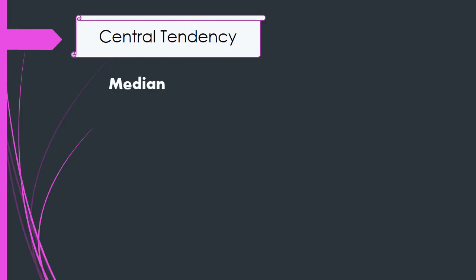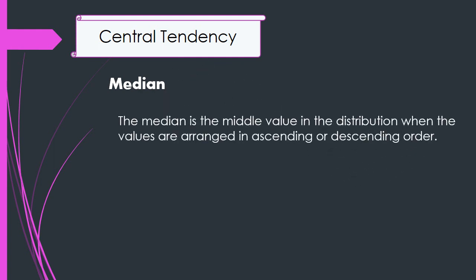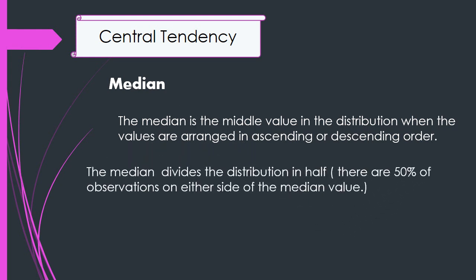The second measure of central tendency is the median. The median is the middle value in the distribution when the values are arranged in ascending or descending order. The median divides the distribution in half. There are 50% of observations on either side of the median value.